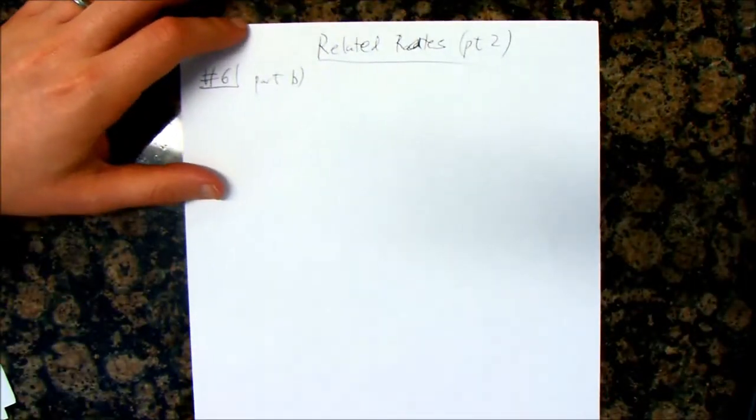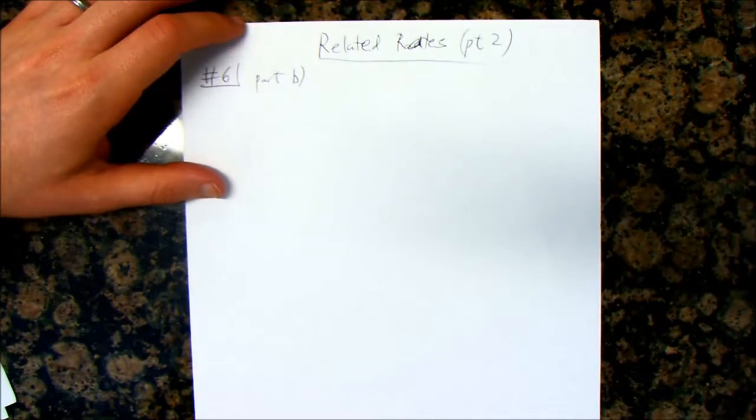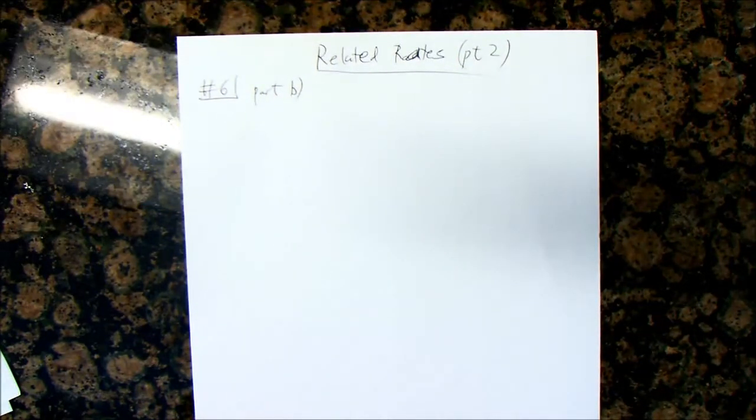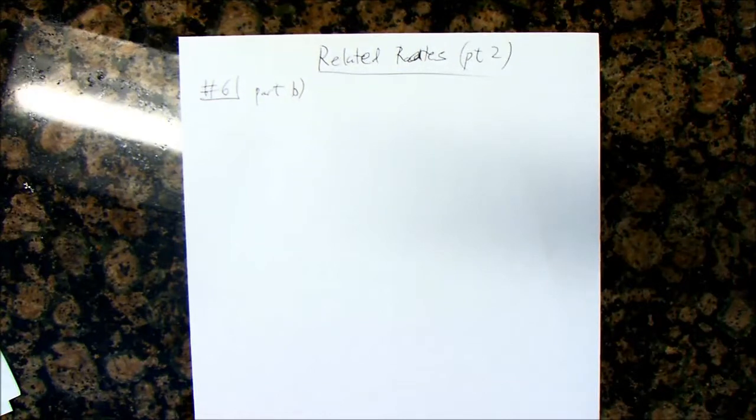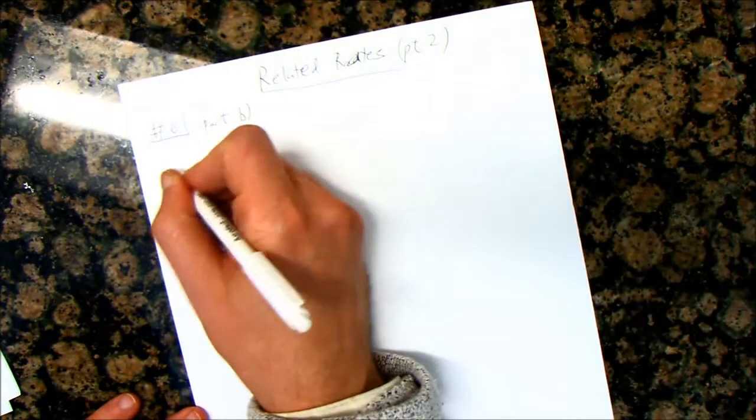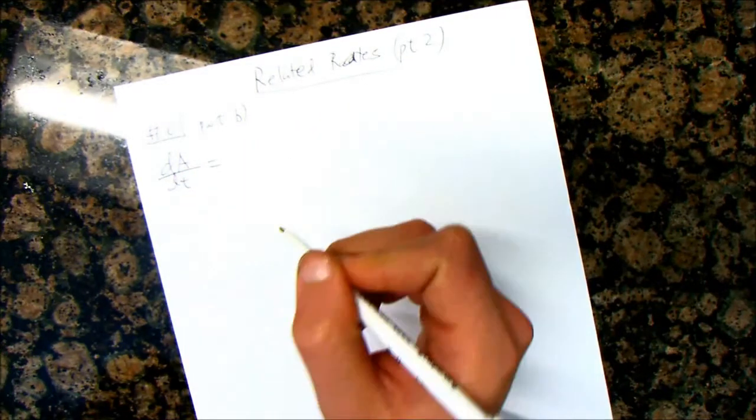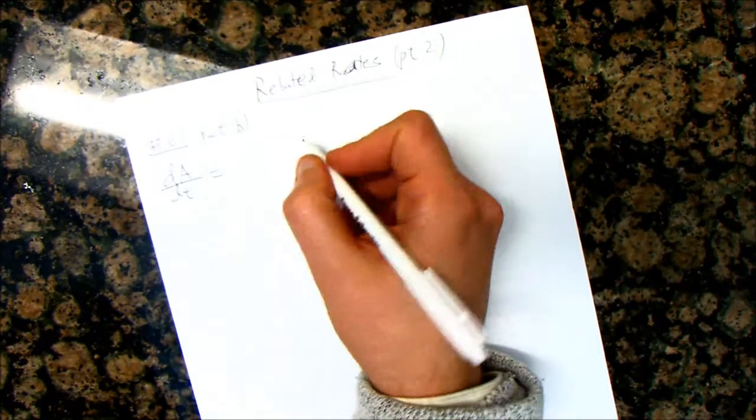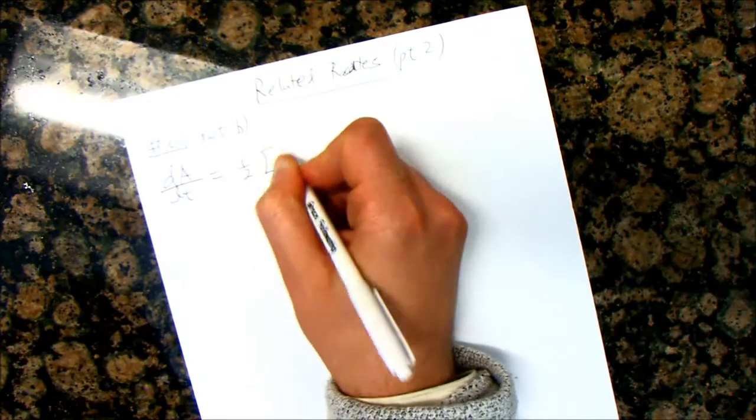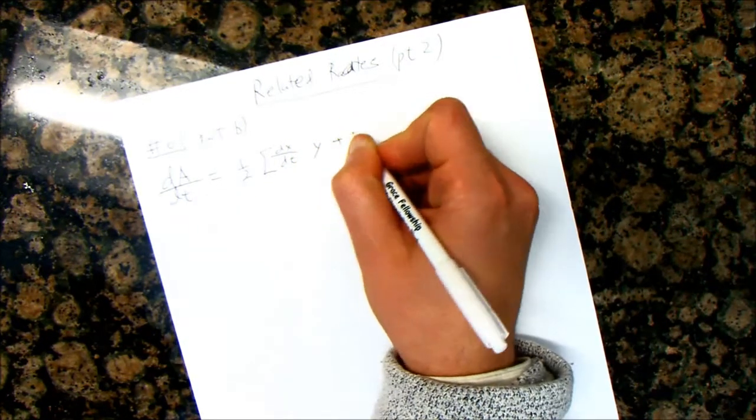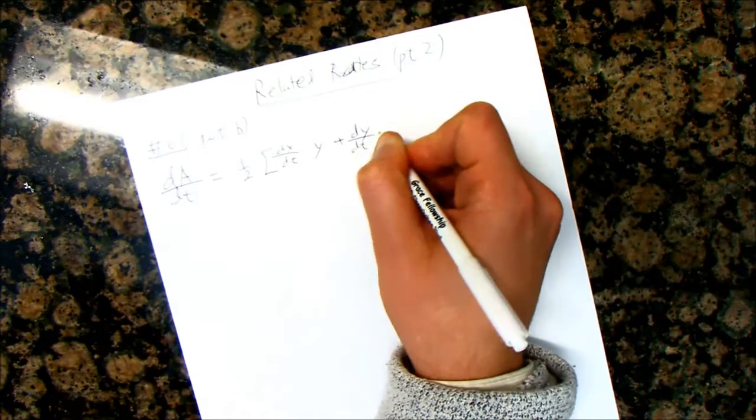Hey everyone, this is part 2 of the related rates homework. I left off on number 6, and I left you with the answer to part B. So we figured out that dA/dt is equal to 1/2 times dx/dt times y plus dy/dt times x.